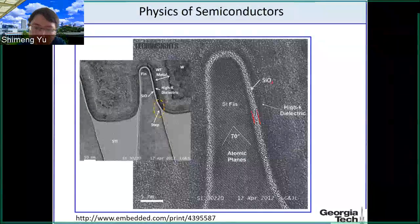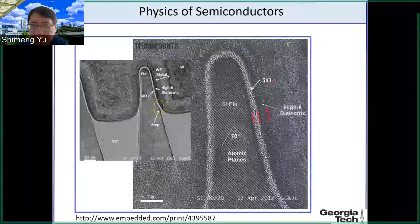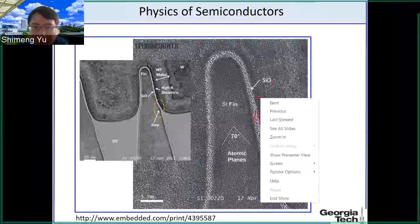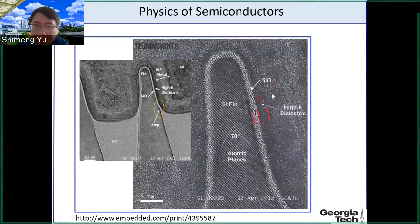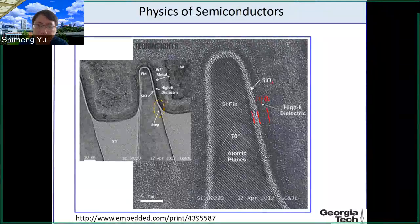The lighter-colored region is an interface oxide material — silicon dioxide. The darker region is another layer of high-k dielectric. The industry uses hafnium oxide, HfOx — hafnium dioxide.